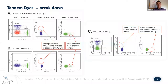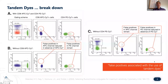You see the exact same thing for PE Cy7: if you remove PE Cy7 from the equation using fluorescence minus one, you no longer see false positives. This is from back in 2004, and there's more literature now that backs this up. False positives are associated with the use of these tandem dyes, which is kind of scary.